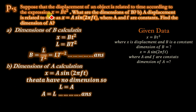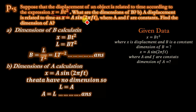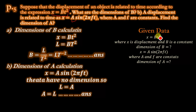Problem 5: Suppose the displacement of an object is related to time by x = b·t². Here x is displacement, b is a constant, and t is time. What are the dimensions of b? Part b: displacement is related to time as x = A·sin(2πft), where A and f are constants. Find the dimensions of A.